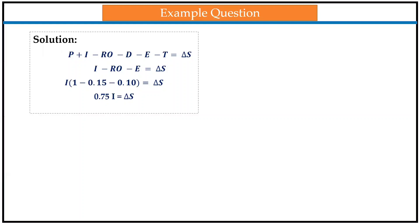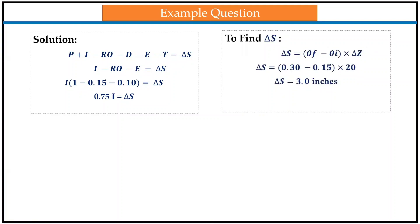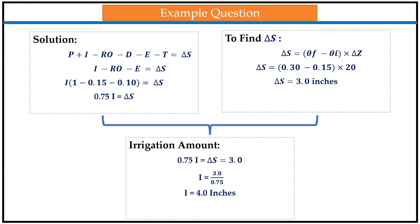In the question, we are given runoff and evaporation losses: 15 mm runoff loss and 10 mm evaporation loss. By solving this equation through simple mathematical steps, we can get the irrigation in terms of the change in soil water storage. Moving on to the second step, we are given the final volumetric water content and the initial volumetric water content, along with the depth of the root zone. By solving this equation, we find the change in soil water storage, which gives an answer of 3 inches.